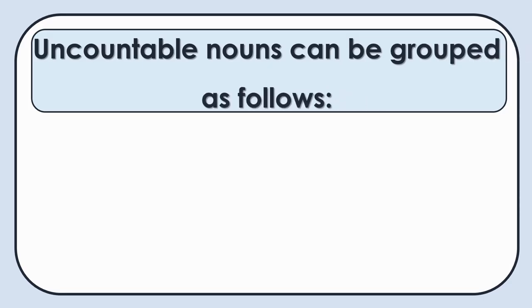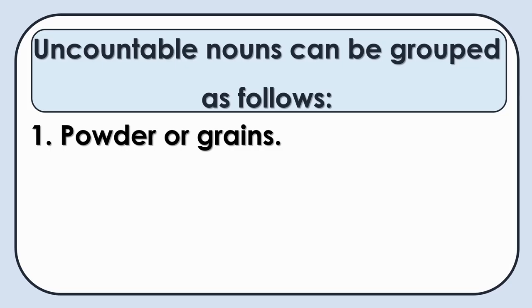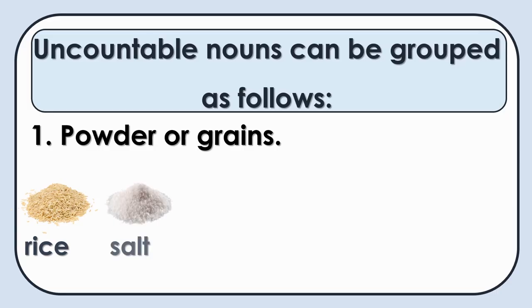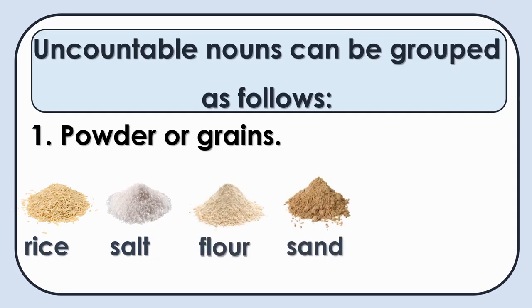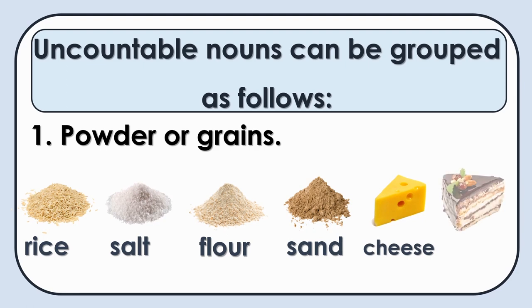Uncountable nouns can be grouped as follows. Powder or grains: rice, salt, flour, sand, cheese, cake, etc.